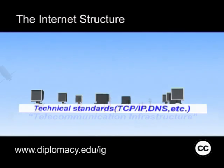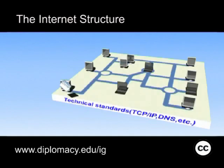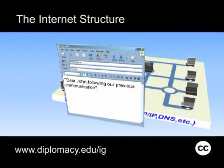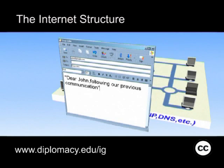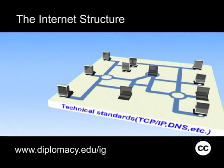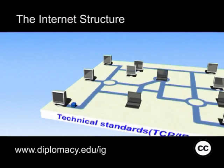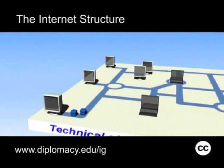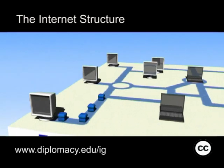The middle layer is the place where the Internet operates. It consists of a wide variety of Internet protocols and standards, such as TCP/IP, DNS, and SSL.